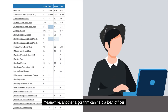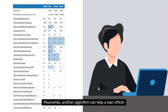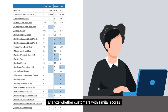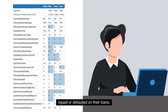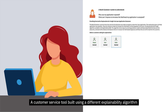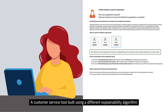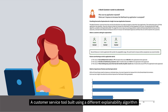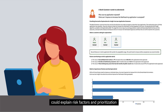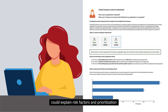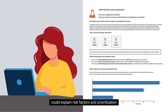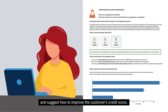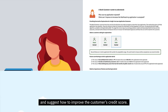Meanwhile, another algorithm can help a loan officer analyze whether customers with similar scores repaid or defaulted on their loans. A customer service tool built using a different explainability algorithm could explain risk factors and prioritization and suggest how to improve the customer's credit score.